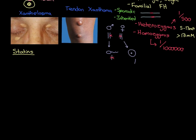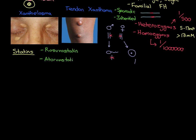I will list four statins that everyone watching should know the names of, then we'll discuss the mechanism. They all end in 'statin', which is very helpful. Number one: rosuvastatin. Underneath it: atorvastatin, a very famous drug. Then simvastatin, also a very famous drug. And finally, a less used statin: pravastatin. The two main ones above all others that you need to know are atorvastatin and simvastatin - these are the two that are used most of all. Atorvastatin is one of the best-selling drugs ever created.